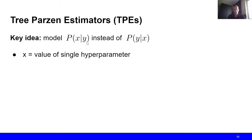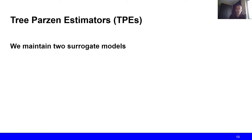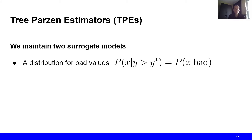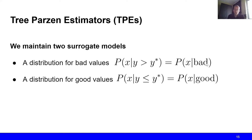More specifically, what we do with TPE is that we maintain two surrogate models or two distributions. We have one distribution for the bad values — the probability distribution over the hyperparameter values given that the loss y was worse than some threshold, meaning the loss was higher than some determined threshold. We also have the distribution for good values — the density over the hyperparameter value x given that the loss is lower than or equal to the threshold. This can be interpreted as the probability of x given that it comes from the good distribution.